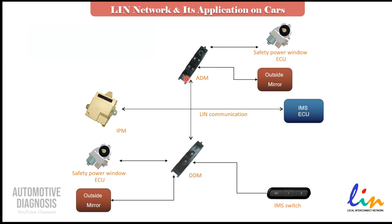The driver door module and assist door module use the LIN network. The IMS ECU — the power seat control module with memory — communicates to the IPM, which is your fuse box, via LIN network as well. In normal situations, these four control units would have needed many wires, but now they just use the LIN network.